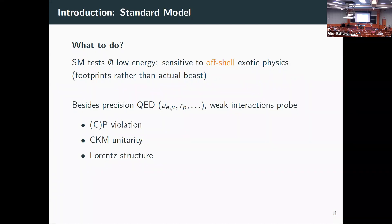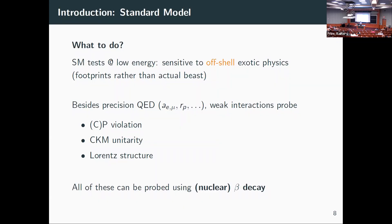The weak interaction is very nice for this purpose because it breaks symmetries — it breaks charge conjugation and parity, which we've known since the 50s. There are parameters we can test with far-reaching consequences: CKM unitarity, and probing what the Lorentz structure actually is — for instance, QED is a pure vector transition, so what does the weak interaction look like? All of these can be probed by beta decay.